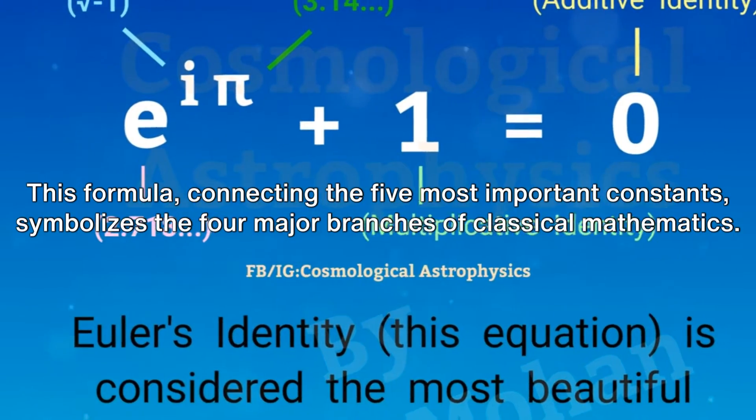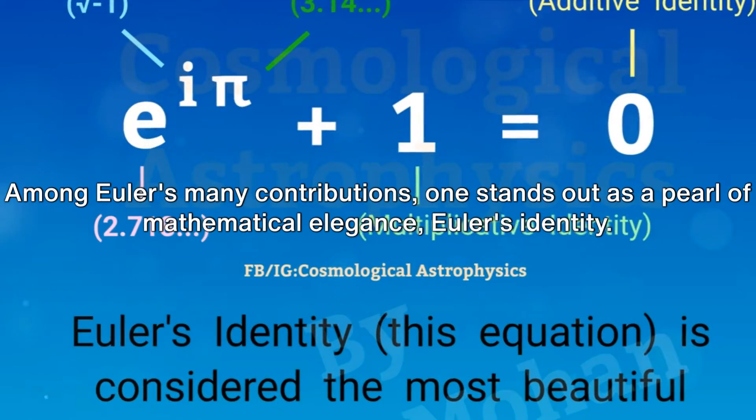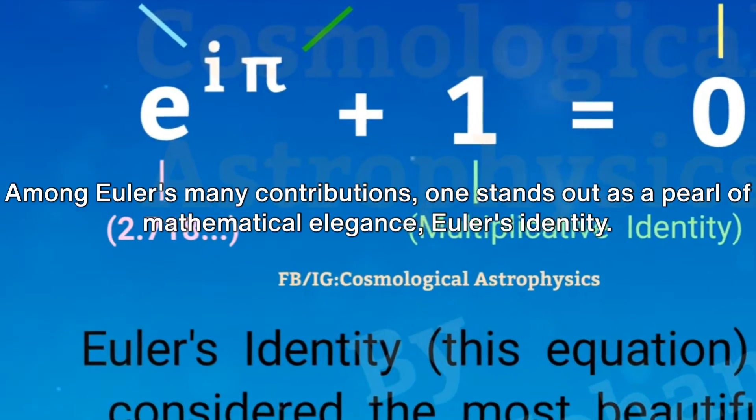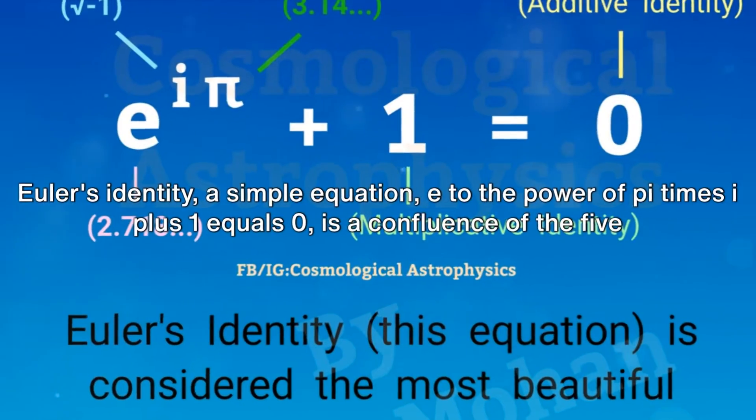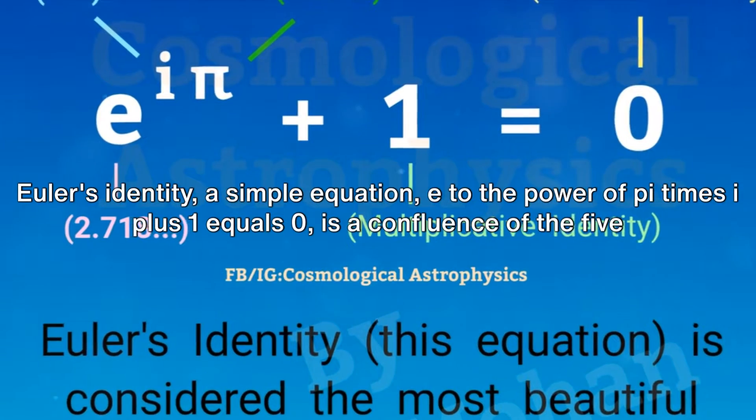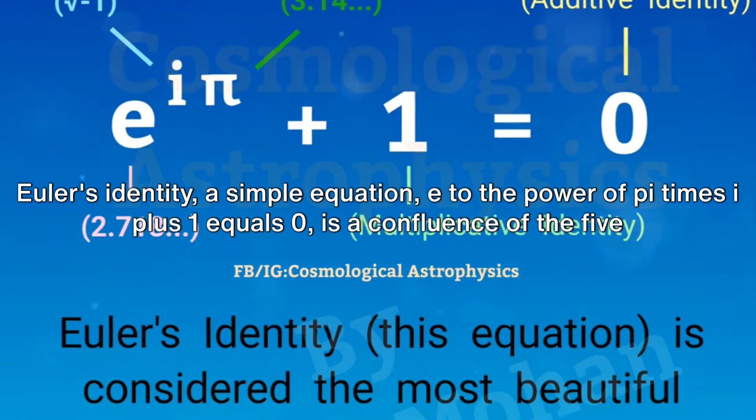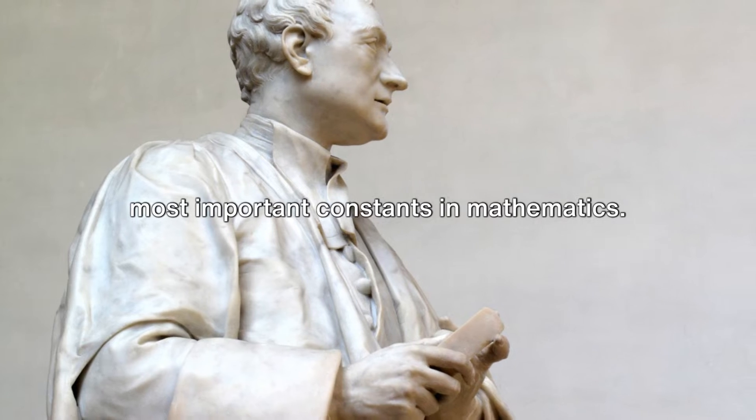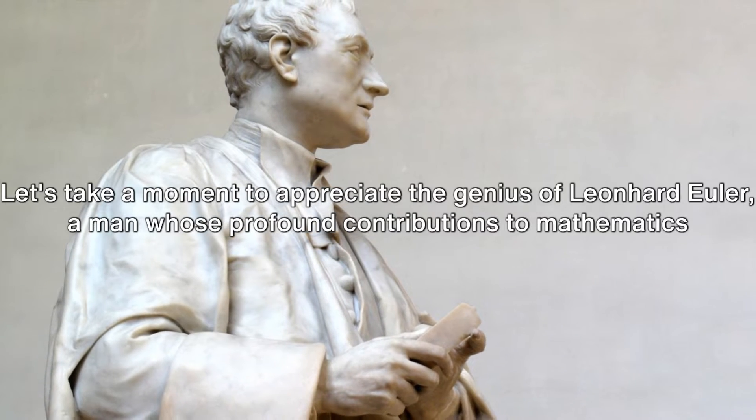Among Euler's many contributions, one stands out as a pearl of mathematical elegance: Euler's identity. This simple equation, e to the power of pi times i plus one equals zero, is a confluence of the five most important constants in mathematics.